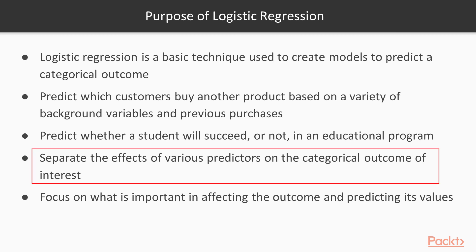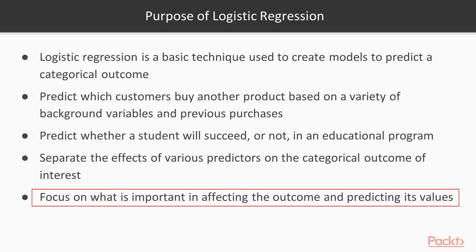With logistic regression, its purpose is going to be to separate the effects of the various predictors on the categorical outcome of interest. So we're going to end up focusing on what is important in affecting the outcome and also what is important in terms of predicting the values.